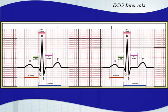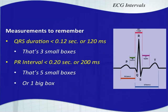Some measurements to remember: QRS duration should be less than 0.12 seconds, which is 120 milliseconds — that's three small boxes. Your PR interval should be less than 0.20 seconds, which is 200 milliseconds — that's five small boxes or one large box.